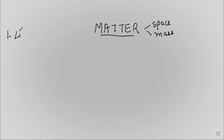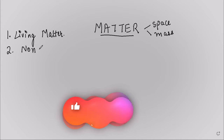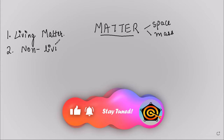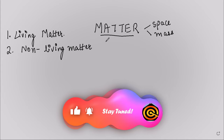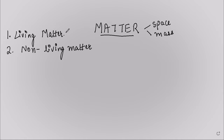Matter can be either living matter or non-living matter. In the living matter, they can grow, move, and reproduce — for example, plants and animals. In the non-living matter, stones, paper, river, mountain, and chair are all examples of non-living matter.